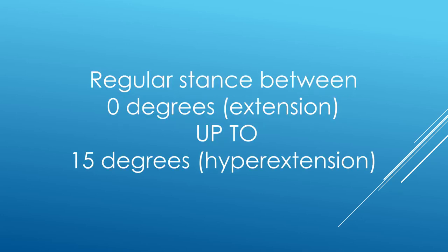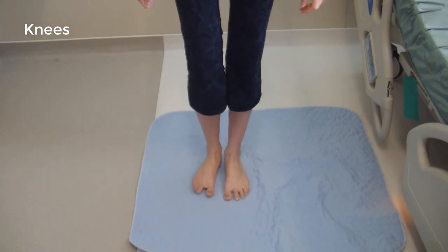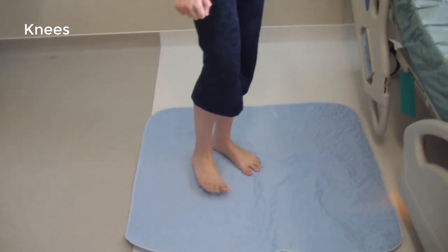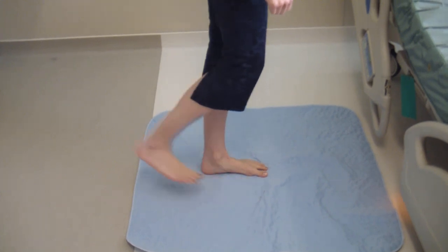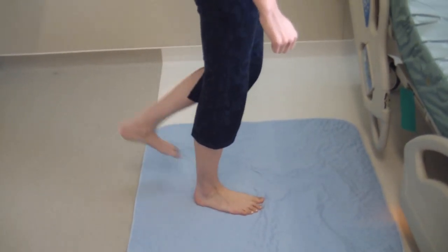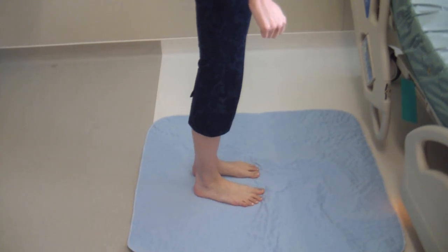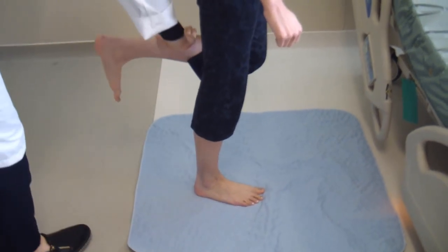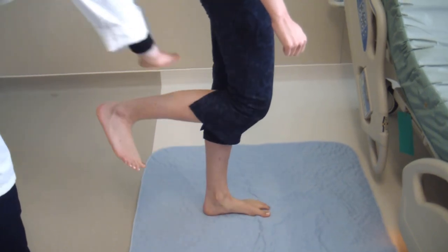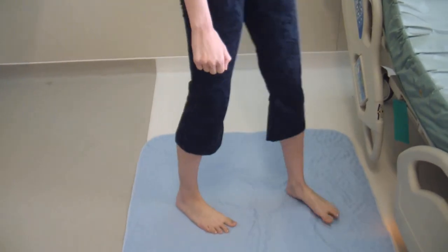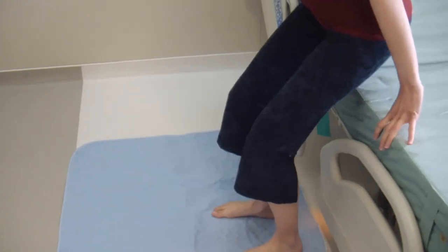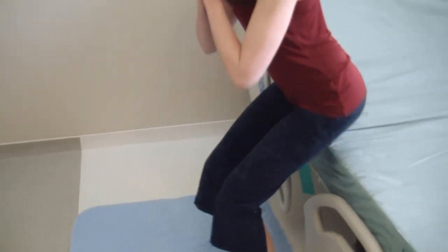Next, we will assess the knee. Having the person standing in their regular stance should be an extension of 0 degrees. In some people, a hyperextension of up to 15 degrees may be present. With the patient standing, ask them to flex the knee. Flexion should be between 130 to 150 degrees. Test muscle strength by trying to pull the leg forward as the patient remains flexed. My patient has a grade 5. My patient is able to move from a low seated position to a standing position, which demonstrates their extension muscle strength.